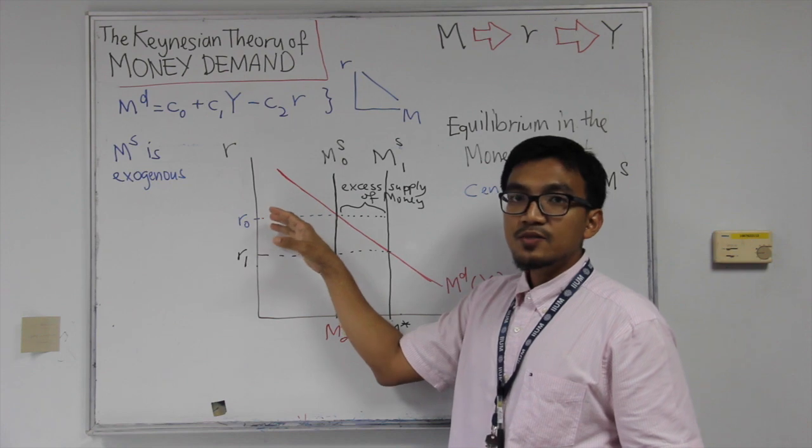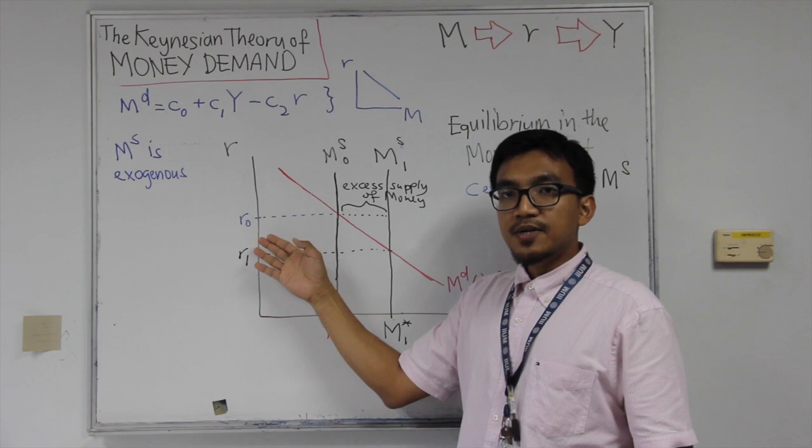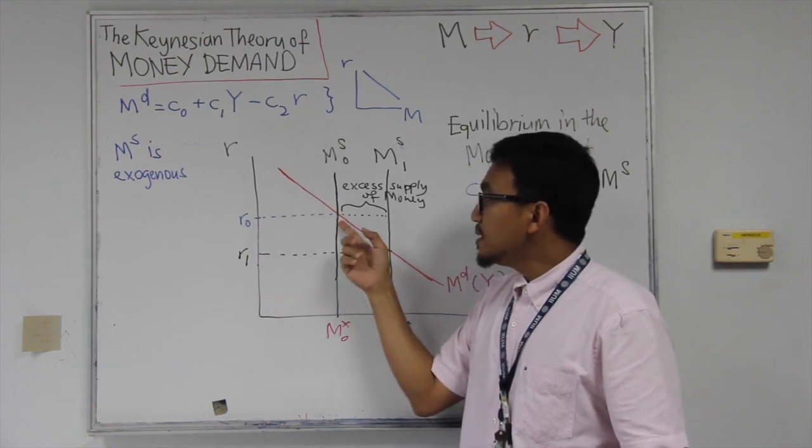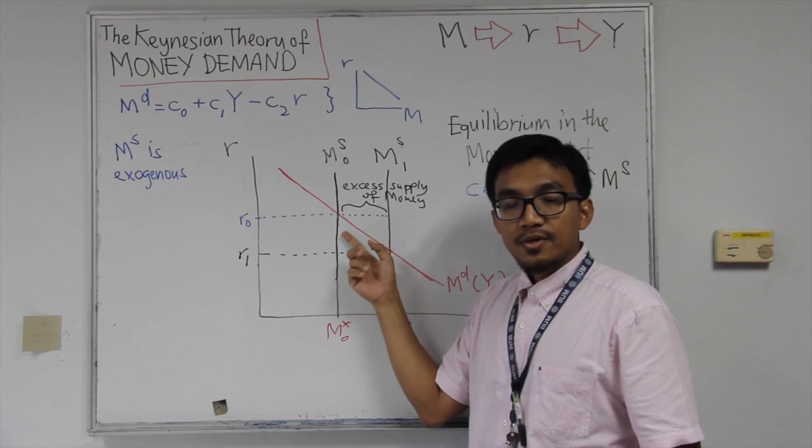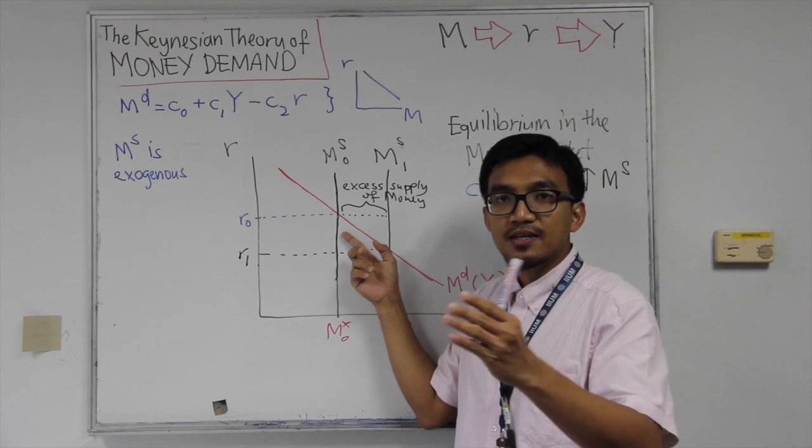So now this is, this will create a pressure on the interest rate to go down. So this creates a pressure on interest rate to go down. As interest rate goes down, the demand for money will go up. Now people would want to hold more money. There'll be an increase. So some of the investors will, the interest rate will rather be lower than the normal interest rate.